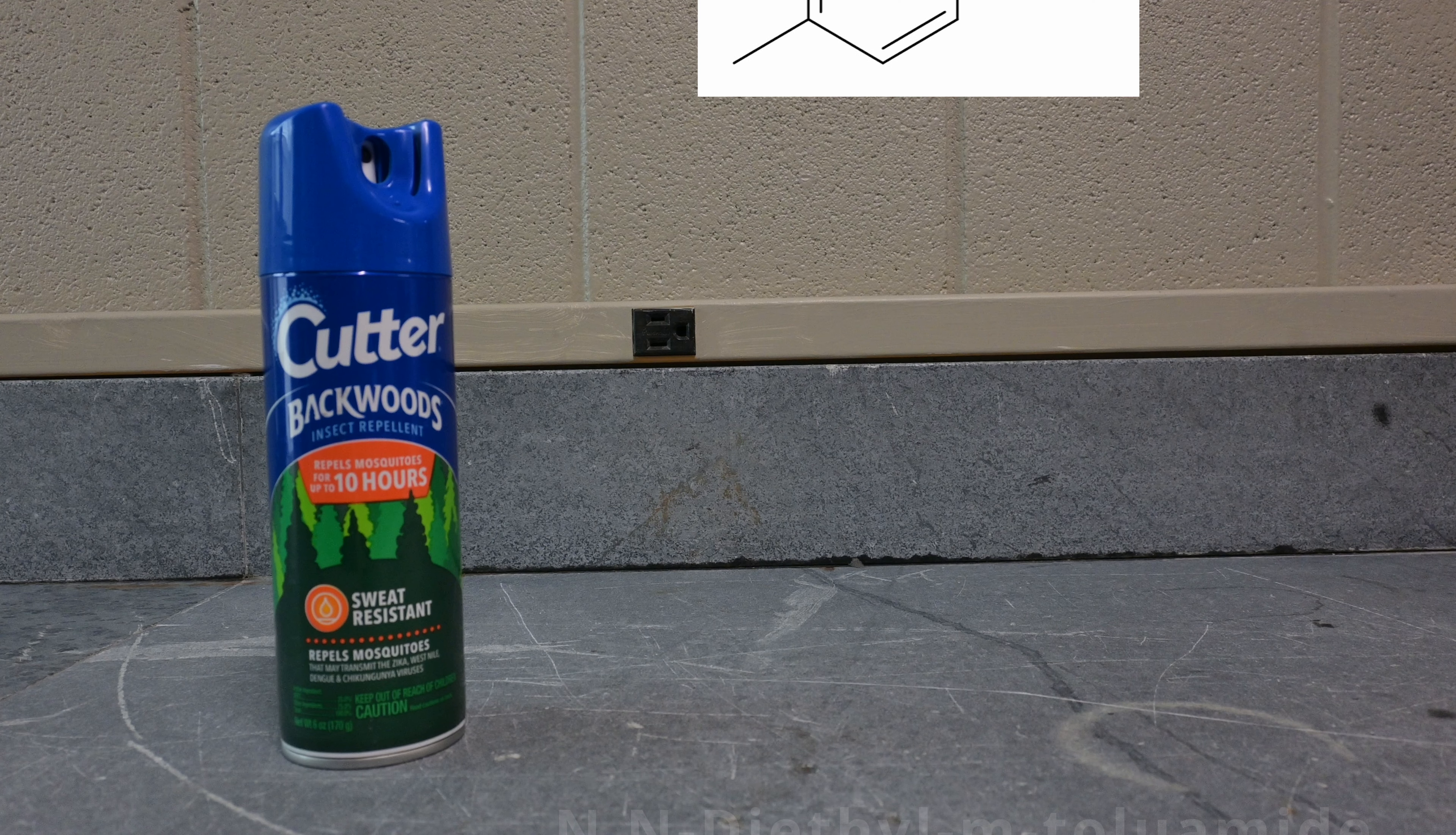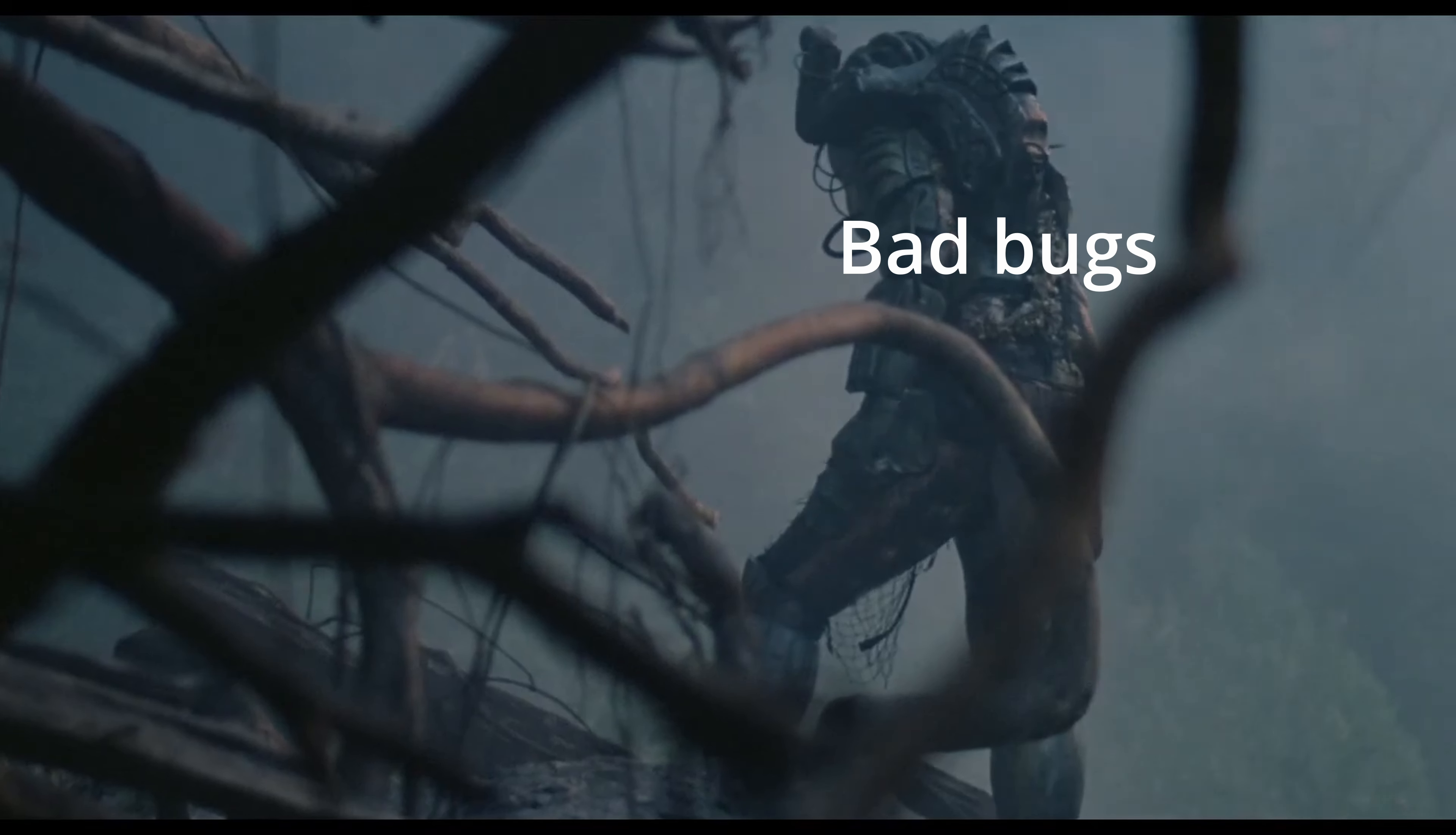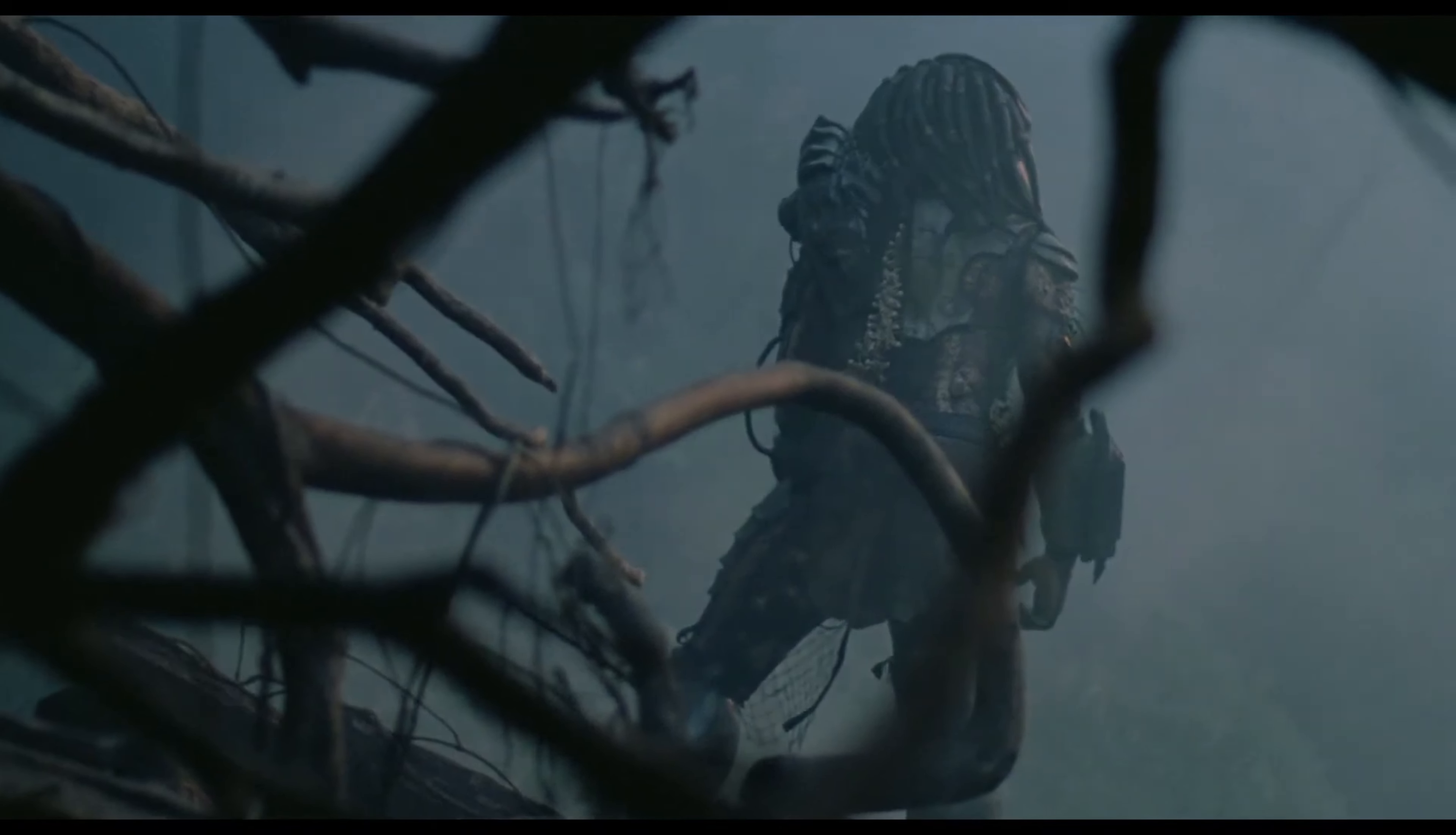DEET's chemical name is NN-diethyl-M-toluamide, and it works by confusing the sensory receptors of insects. When applied to the skin, DEET masks the natural odors emitted by us humans, which are typically attractive to mosquitoes and other biting insects. Instead of acting as a repellent that would drive away insects, DEET essentially makes it difficult for them to locate us in the first place. The compound interferes with the neurons and receptors in an insect's antennae and mouthparts to detect lactic acid and carbon dioxide.